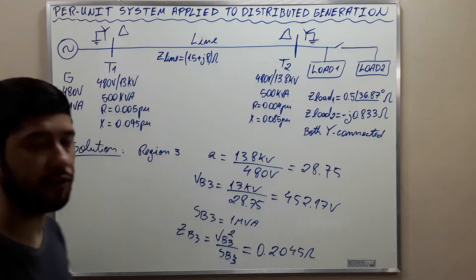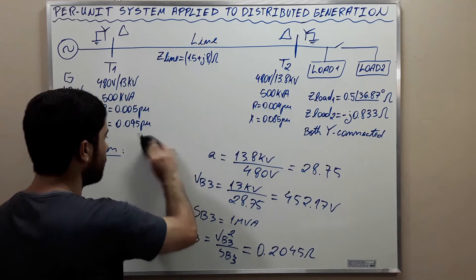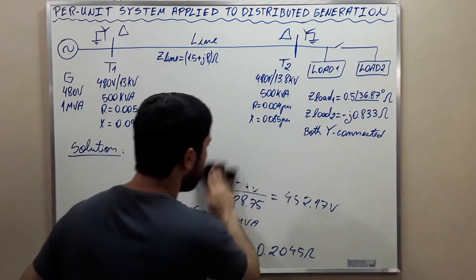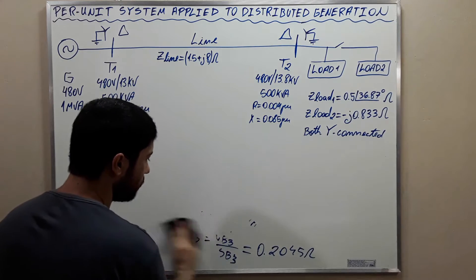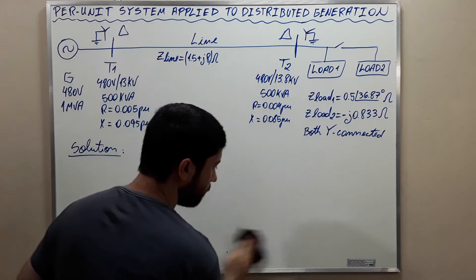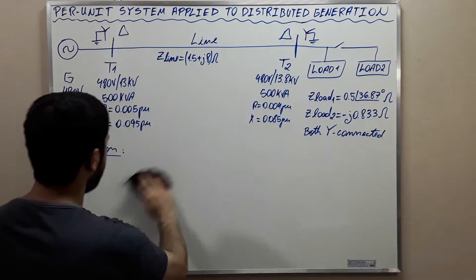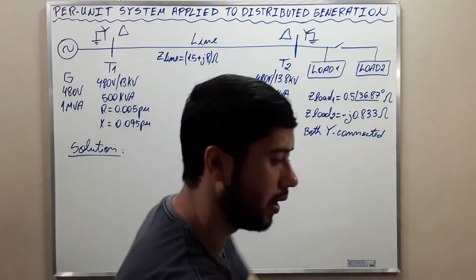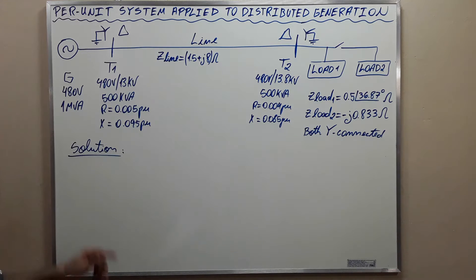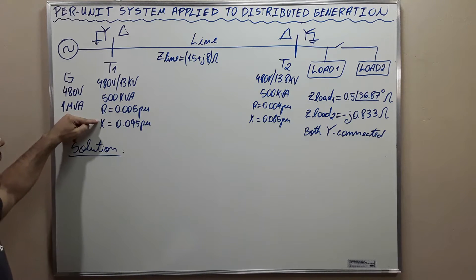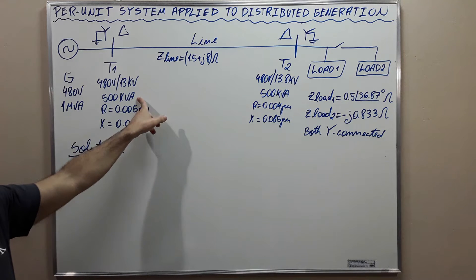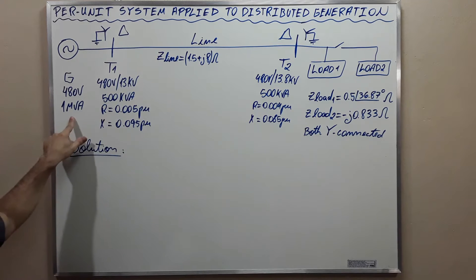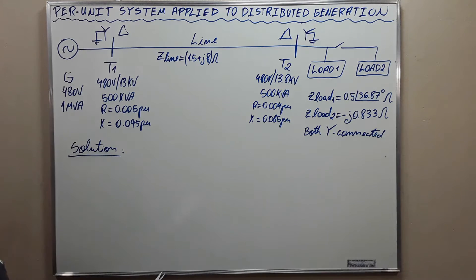Now let's do the adjustment. We need to adjust the transformer impedance values because we are using different values for the base apparent power — instead of using 500 KVA, we are using 1 MVA. Therefore, we will need to carry out these adjustments using the conversion expression.